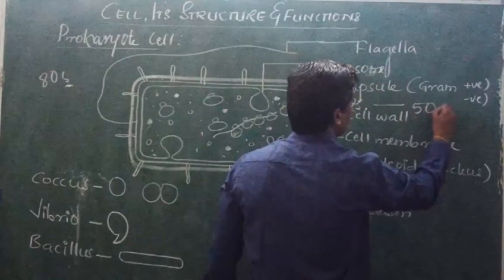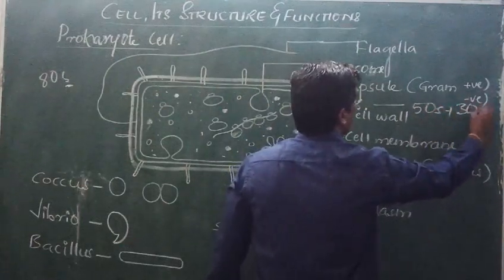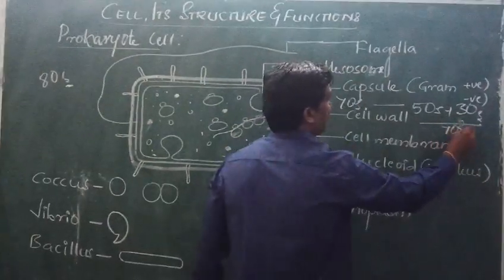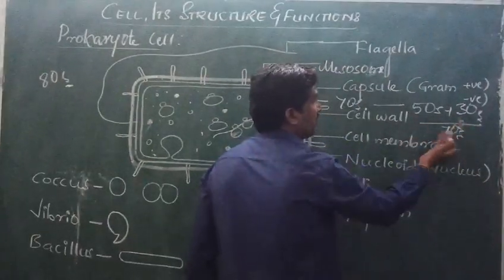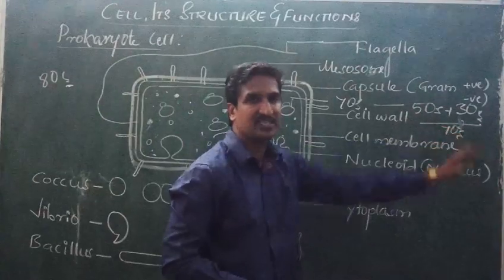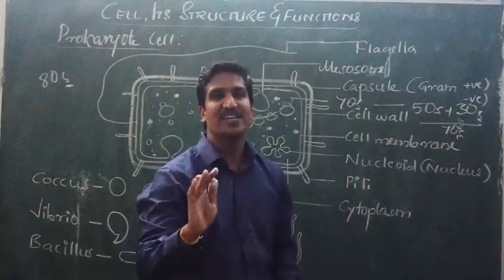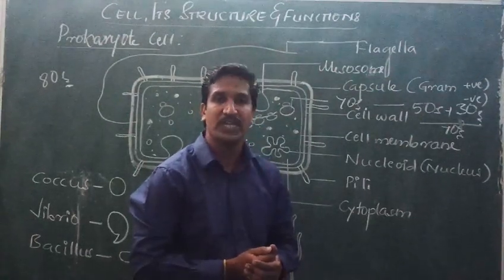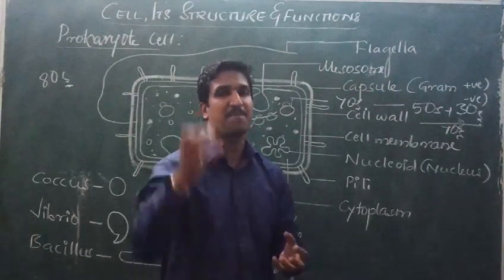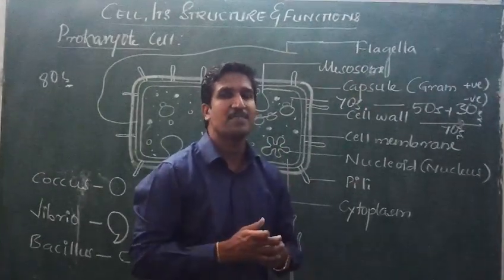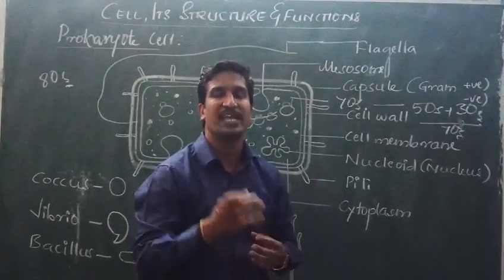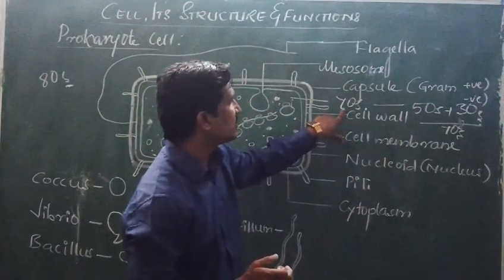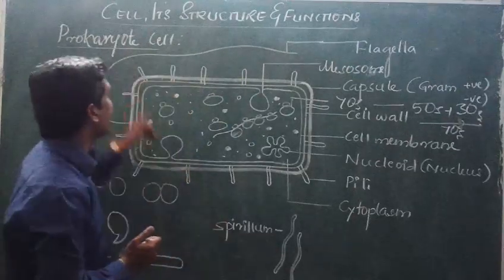You will learn the details later. It is going to be 50S plus 30S, forming 70S. During the study of individual ribosomes, you will get what it actually is. Just remember that 70S type ribosomes are present in prokaryotes.